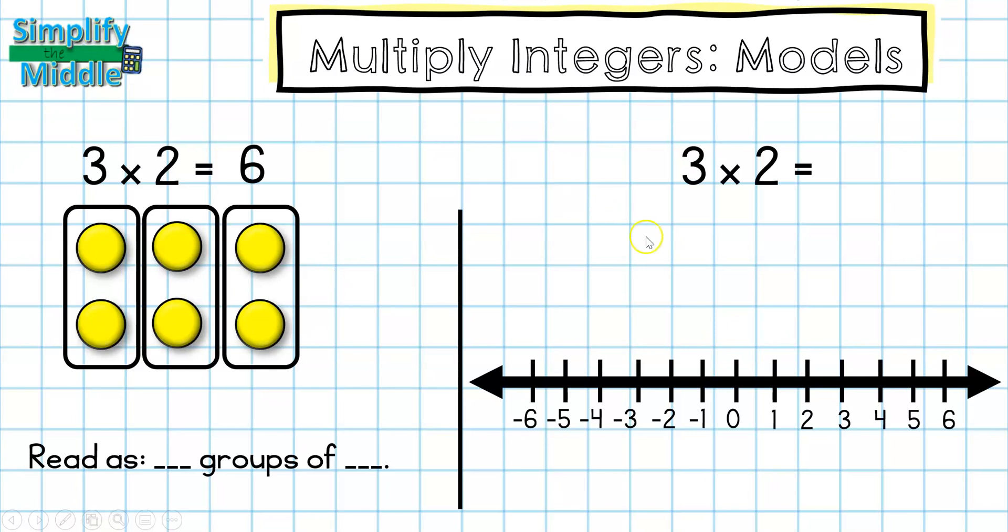Let's look at the same problem on a number line. We're going to look first at this number. Remember in this part of the problem with the counters, that told us how many were in each group. On this one, it's going to tell me how far to travel and what direction. So I'm going to be traveling 2 to the right, and this number tells me how many times to repeat that. So I'm going to repeat that three times. And then where I land is going to be my answer. So 6 is my answer here.